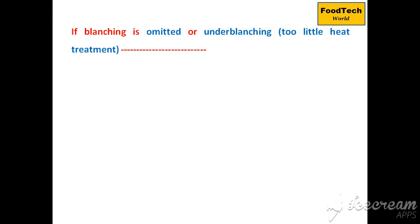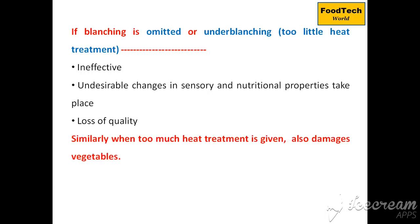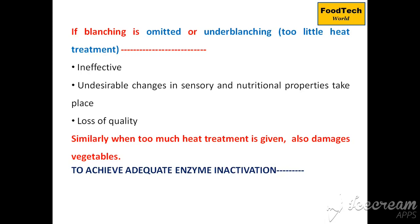When blanching is omitted or under-blanching is done, the process becomes ineffective, resulting in undesirable changes in the sensory as well as nutritional attributes of food products — in short, a loss of quality. Similarly, when too much heat treatment is given, it also damages the vegetables.